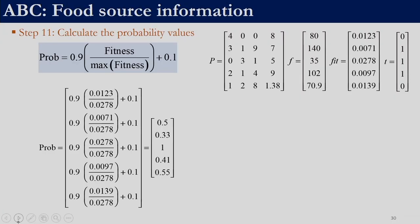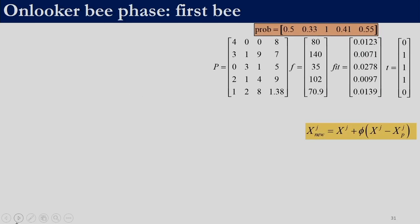Before going to the onlooker bee phase, we need to evaluate the probability associated with each solution. The current population has its objective function values and fitness values. To determine probability, we find the maximum fitness, which is 0.0278, and calculate probability for each solution.